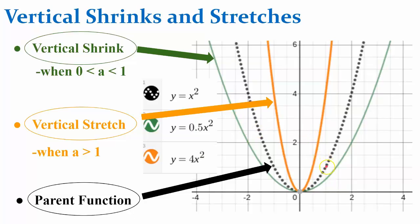If we return to the point on the parent function 1, 1, and multiply the output 1 by 4, we now have the point 1, 4.